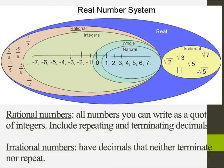And then we've got our irrational numbers, which are basically numbers that cannot be represented as a fraction. You cannot write the square root of 2 as a fraction of two numbers — 4 over 3 would not give you the same as root 2. Irrational numbers have decimals that go on forever and ever, to infinity and beyond, and they don't repeat.